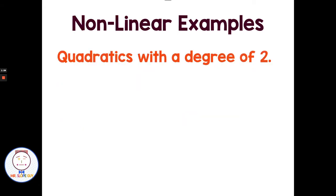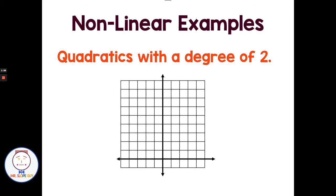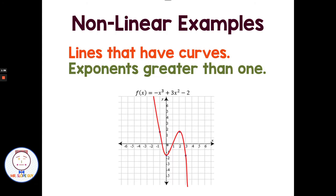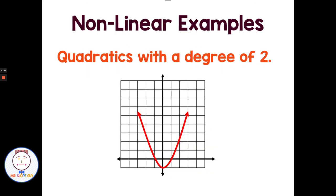Non-linear examples, let's say we have quadratics with a degree of two, something that makes like a parabola shape, makes a U shape, not linear. So it would have an equation with an exponent of like two. That's going to make a parabola-looking shape, not a single straight line. So non-linear.